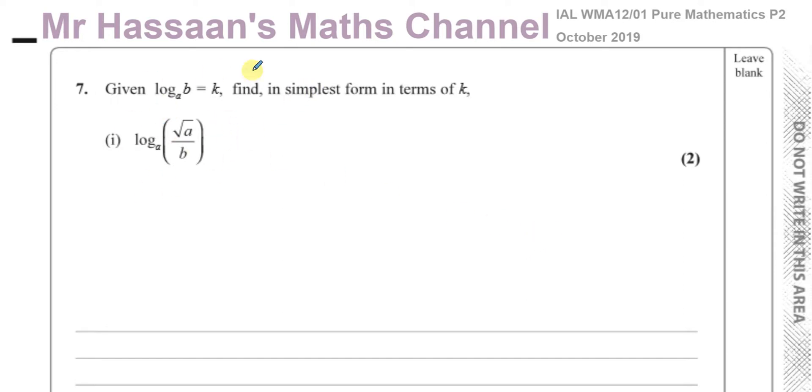Now, this question involves the laws of logarithms. There are three basic laws of logarithms, and if you know those laws, you cannot go wrong. So the first law of logarithm is the law of addition, where log to the base P of Q times R can be split up as log to the base P of Q plus log to the base P of R.